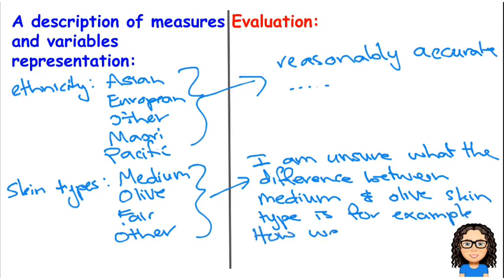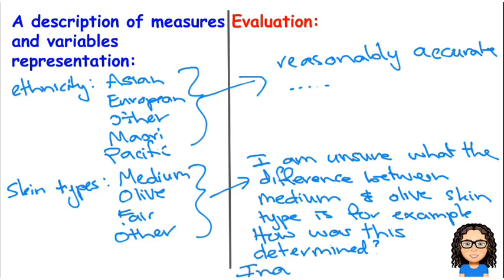How was this determined? Was it, for example, that they had a color chart and they rated you against your color? Or was it that they asked you which category you're in? So depending on how they got this information, this could be quite accurate or quite inaccurate. So there are potential inaccuracies here, and I'm going to leave you to finish writing that up.